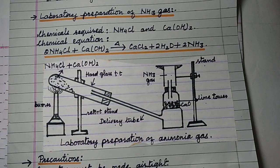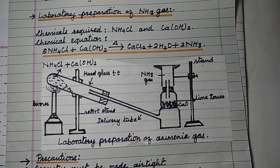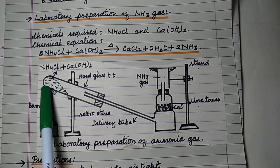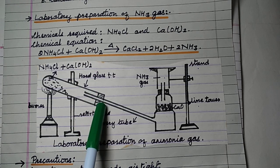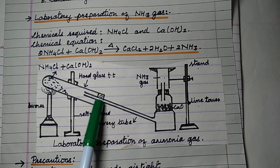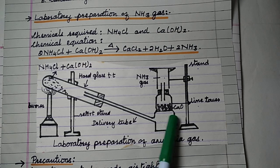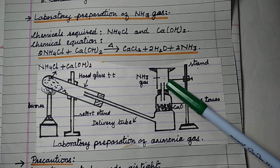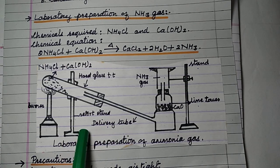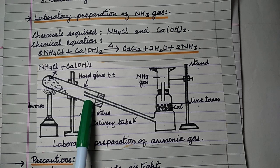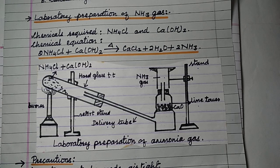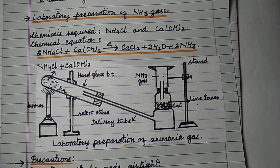Diagram for laboratory preparation of ammonia gas. The important parts are: a hard glass test tube filled with a mixture of ammonium chloride and calcium hydroxide; a lime tower connected to the hard glass test tube by a delivery tube; the delivery tube carries ammonia gas towards the lime tower; a gas jar placed upside down with the help of a stand; a retort stand fixing the hard glass test tube in an inclined position; and a burner for heating.